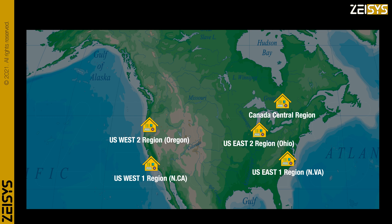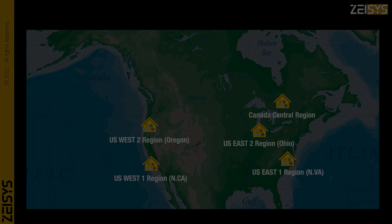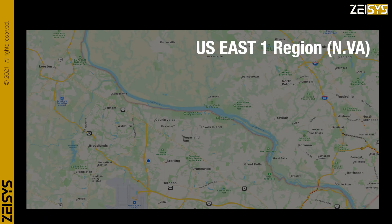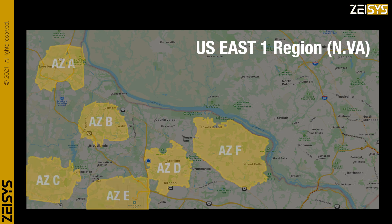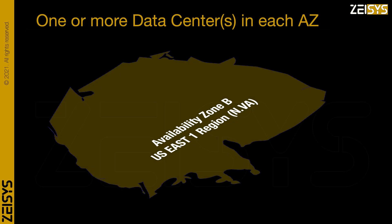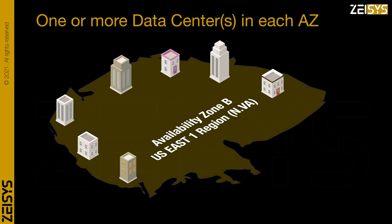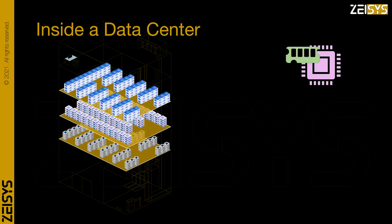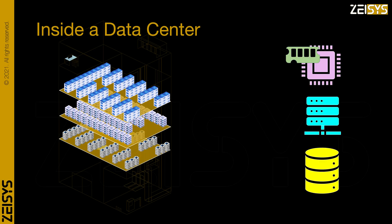Each AWS region consists of one or more availability zones, or AZs. As an example, the US East 1 region in Northern Virginia has six AZs. Each AZ has one or more data centers, and each data center houses computing, networking, and storage hardware.